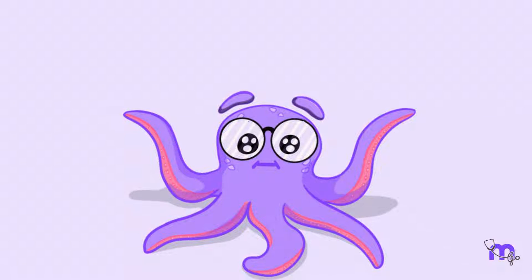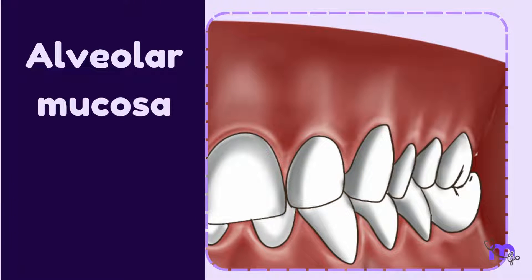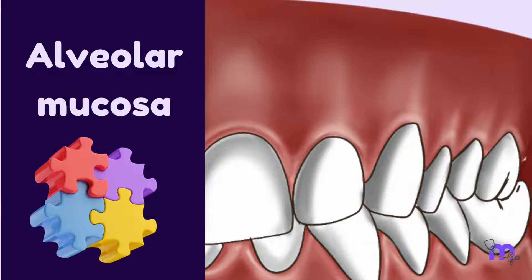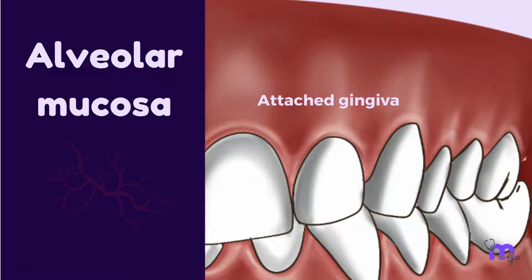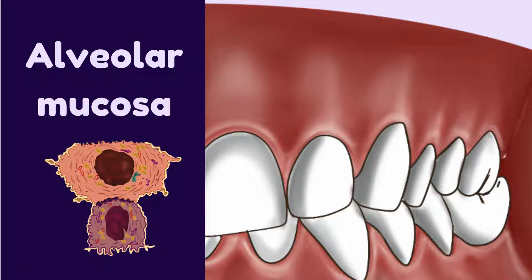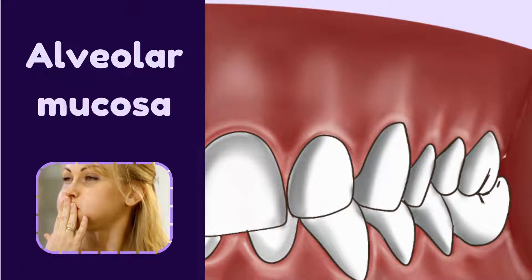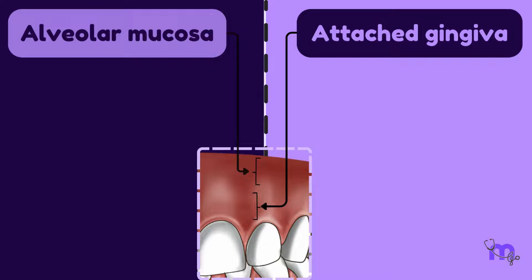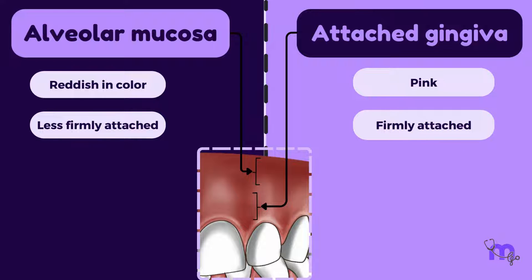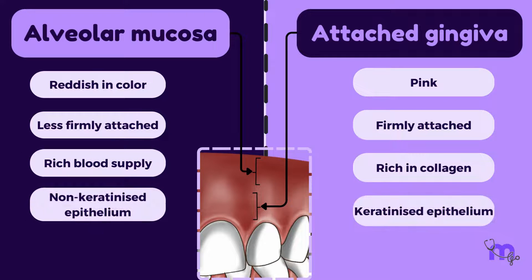Clinically, the alveolar mucosa is the area of tissue beyond the mucogingival junction. It is less firmly attached and redder than the attached GENGIVA due to its rich blood supply. The alveolar mucosa is non-keratinized and provides a softer and more flexible area for the movement of the cheeks and lips. Thus, the attached GENGIVA and alveolar mucosa can be differentiated based on colour, attachment to underlying bone, and histologic features like connective tissue content and keratinization of epithelium.